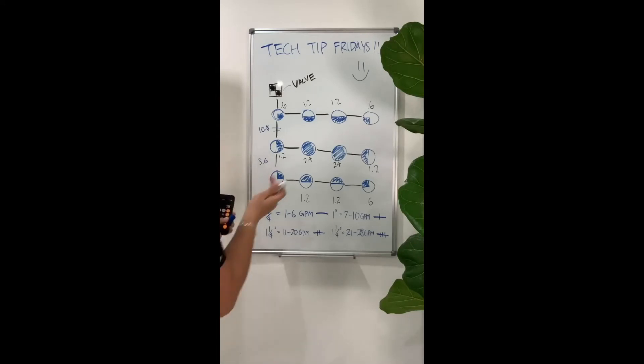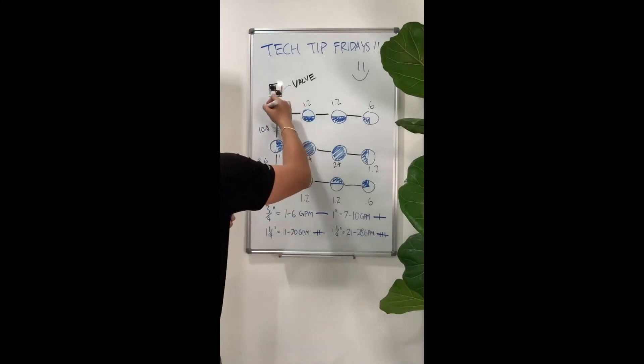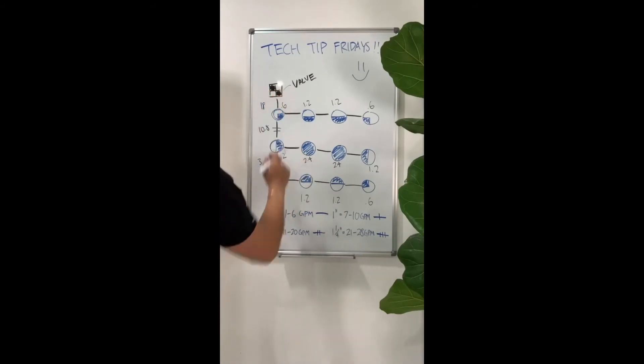So 18 GPMs is running through that section right there. And 18 GPMs happens to be 1 and a quarter inch pipe. So we'll go ahead and put two tick marks right there.